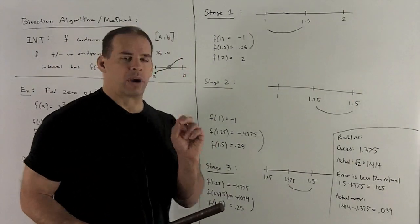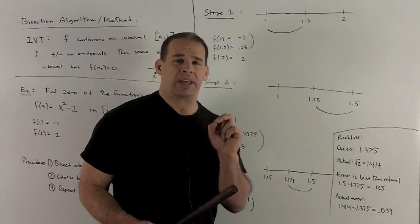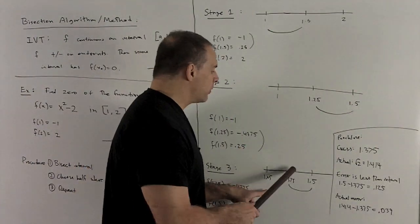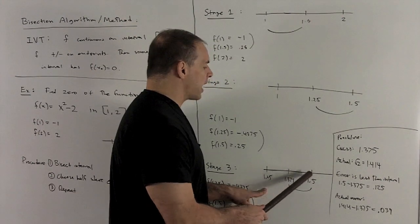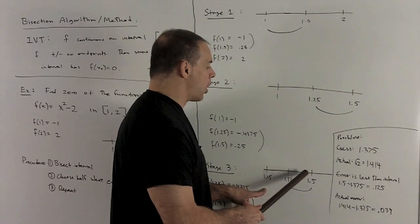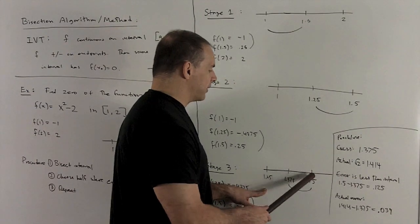Now, what's great about the bisection method is it also tells you how big your error can be. The biggest that my error can be - we know that our point's going to live somewhere in this interval. So the biggest error I can have from 1.375 would be if it was all the way over to 1.5. So we have a bound on the error, which is the length of the interval.